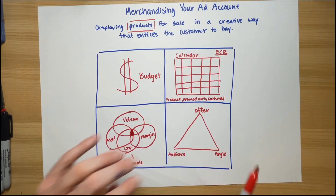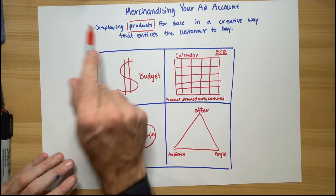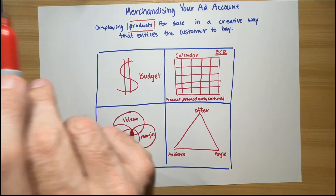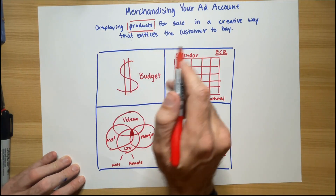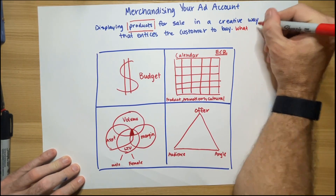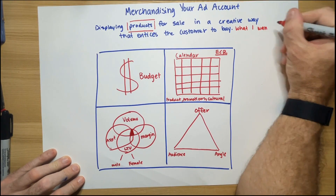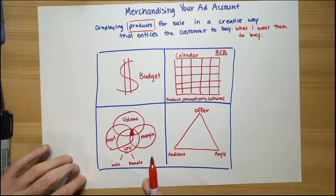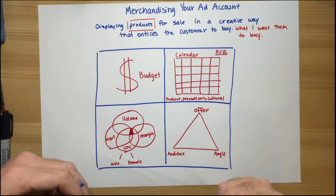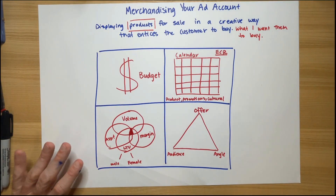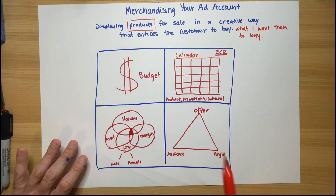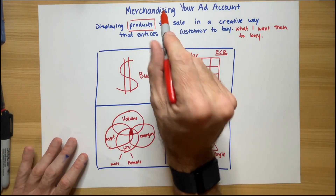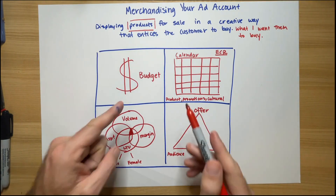If I think about all four of these things in merchandising my ad account, I won't just display products for sale in a creative way that entices the customer to buy — I'll entice them to buy what I want them to buy. A great merchandiser doesn't let purchases happen to them. They make purchases happen on the basis of what purchase will generate the best business outcome. Take these four ideas and apply them in thinking through what you are showing in your online store window.